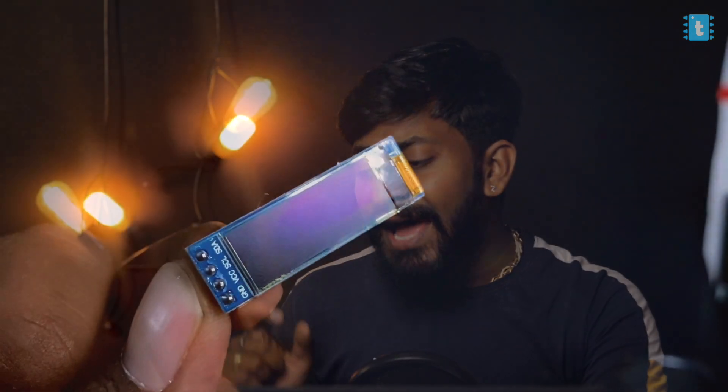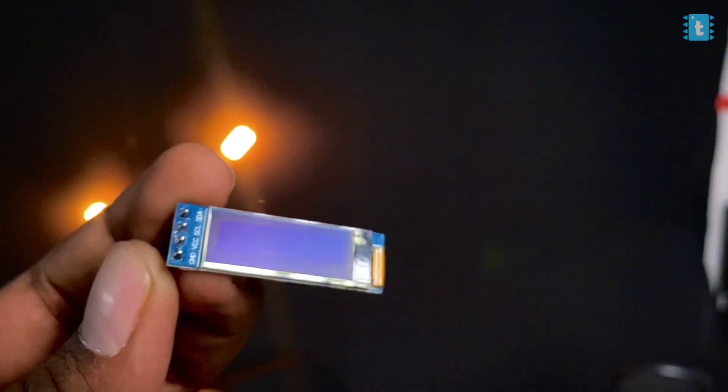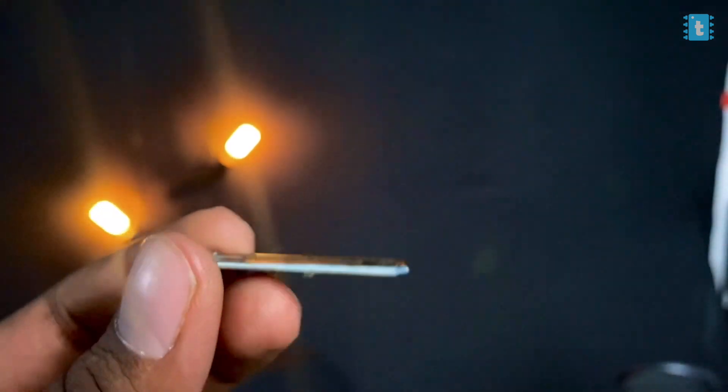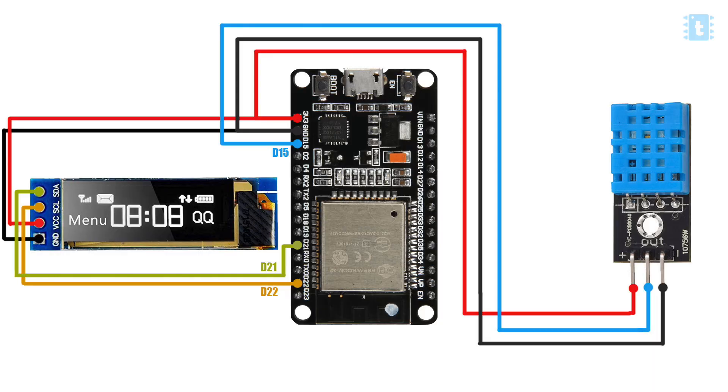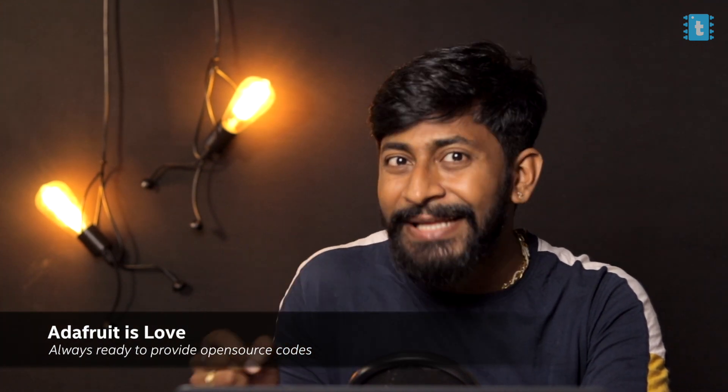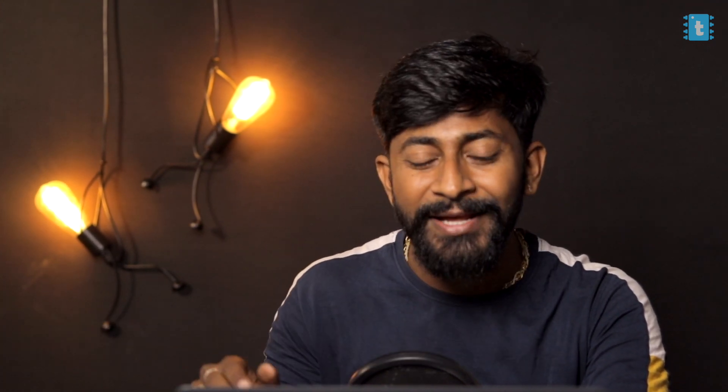That covers interfacing the DHT11 sensor and creating a function in MicroPython. Now let's interface the I2C OLED display with the ESP32. I'm using a 128x32 pixel OLED screen, but any OLED will work. Connect it according to the connection diagram. Before writing code, we need its library — MicroPython doesn't have a built-in one for this display.